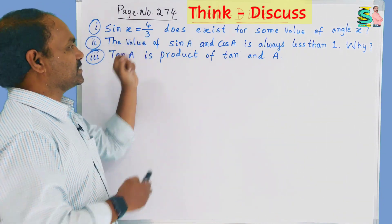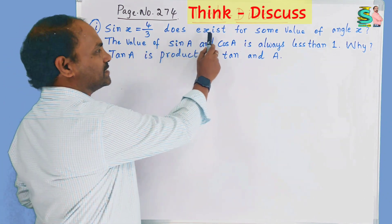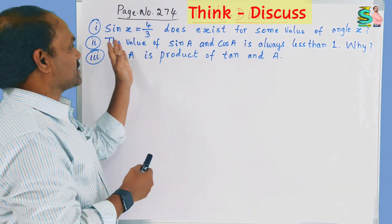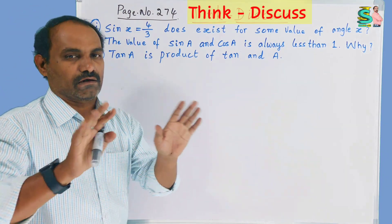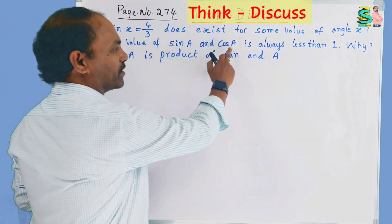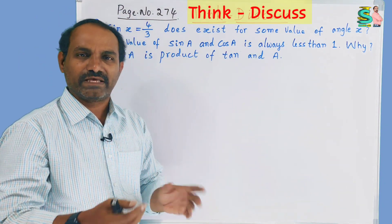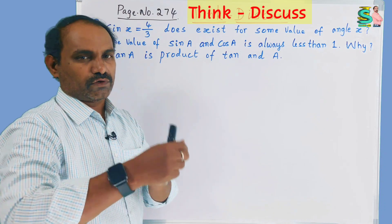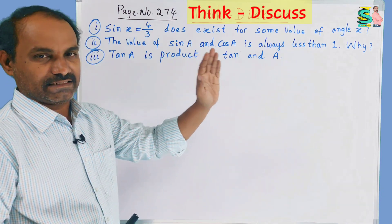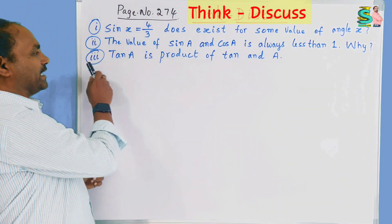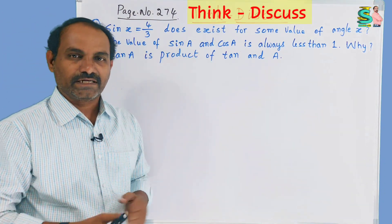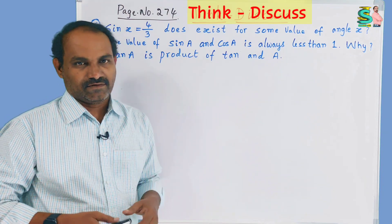Question number 1: sin x = 4/3 — does this exist for some value of angle A? We are going to check whether sin value 4/3 is correct or not. Question 2: the value of sin A and cos A is always less than 1 — why? And question 3: is tan A the product of tan and A? Let us discuss these one by one.